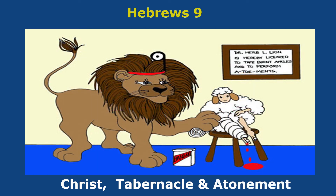Hebrews chapter 9. Chapter 9 is the mirror on the lion doctor's head. Christ is the lamb. Tabernacle is the taped burnt ankle of the lamb. Atonement is the toe operation on the lamb's foot and the spilt blood for Christ's blood atonement.